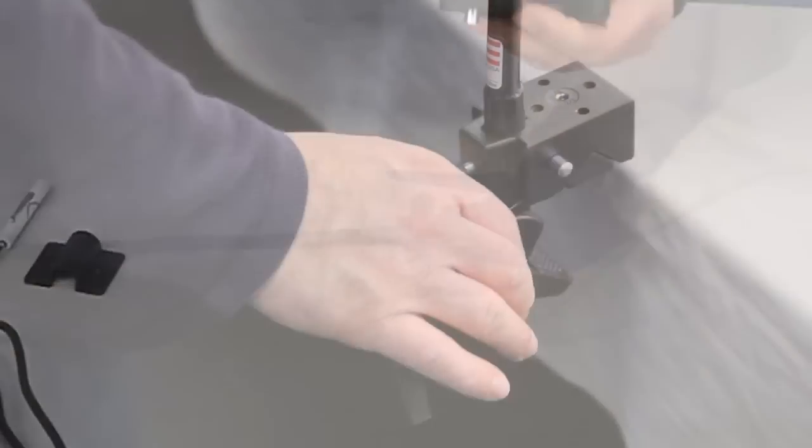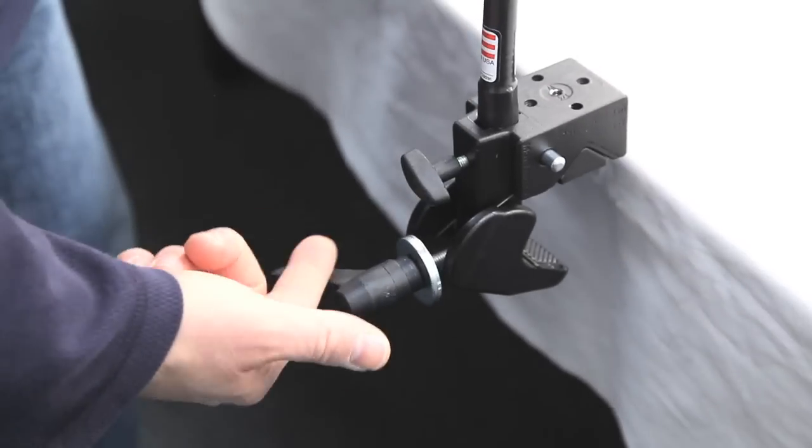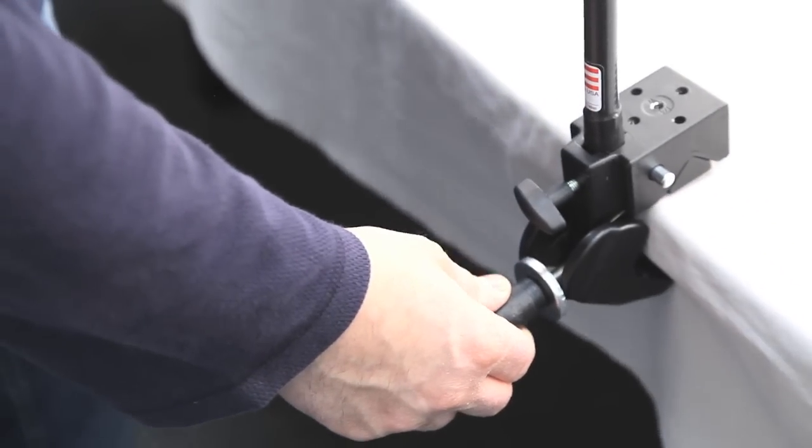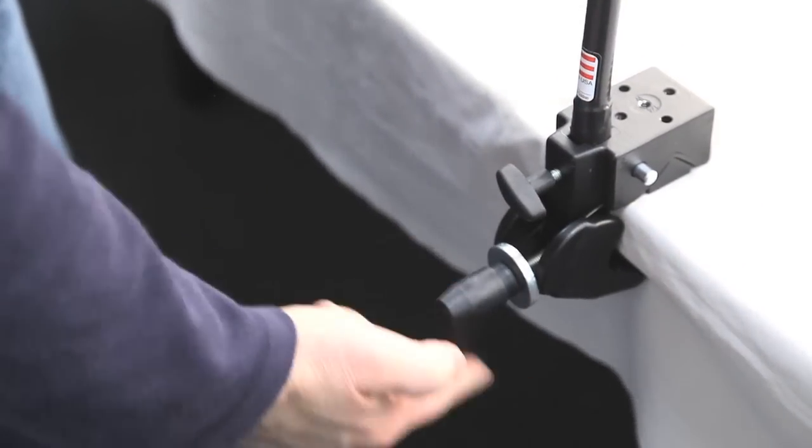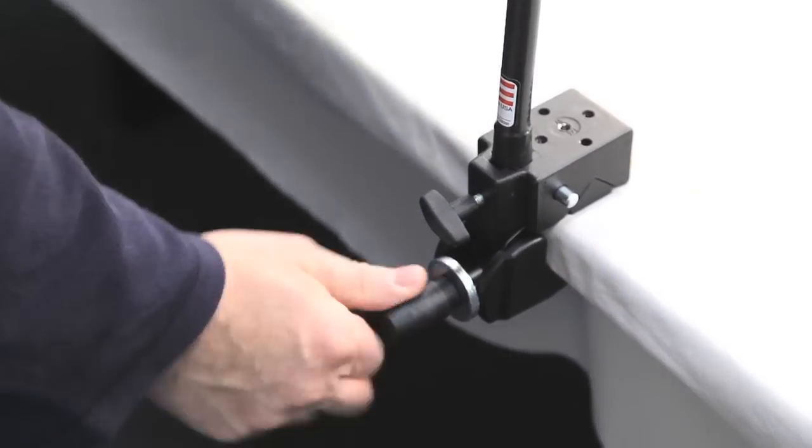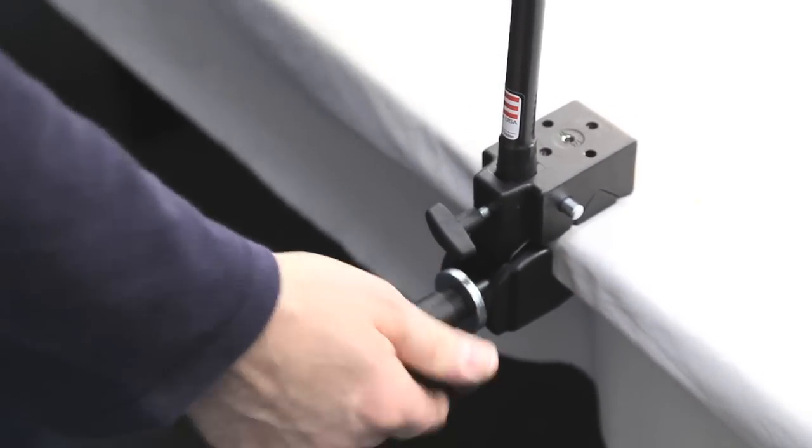So what you would do is, if you're going to be mounting this to a table, you just open the jaw up by backing off the set knob until the proper opening, then put it up against your table and tighten this up with your hand until it's secure. Now this is a very secure mount.